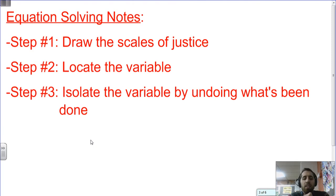The first step, step number one, draw the scales of justice. Step number two, locate the variable, or find the variable. And then the third step is to isolate or to get the variable alone by undoing whatever has been done to it. We're going to say, what's on the same side of the scales of justice with this variable? How do we get rid of them so we can find out what just the variable balances with? We want to know what is the variable equal to, what is its value. These are just the three notes. We're going to follow these steps.